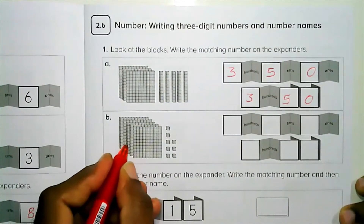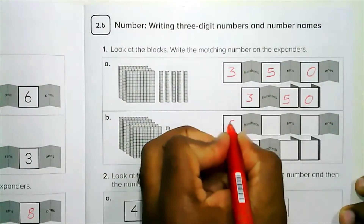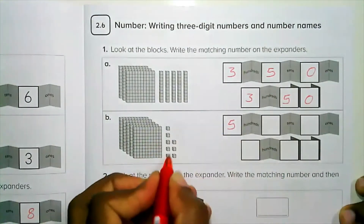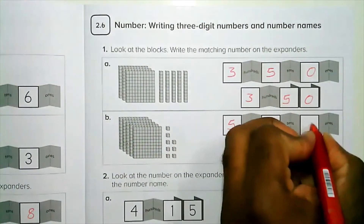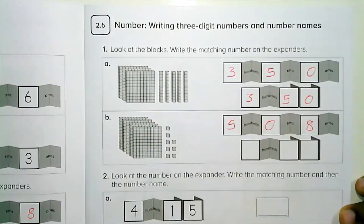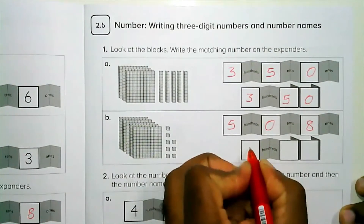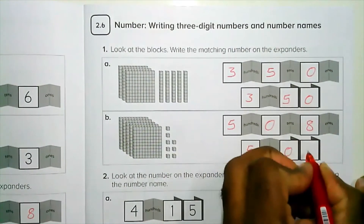Five hundreds, eight ones, zero tens — so we write five hundred and eight.